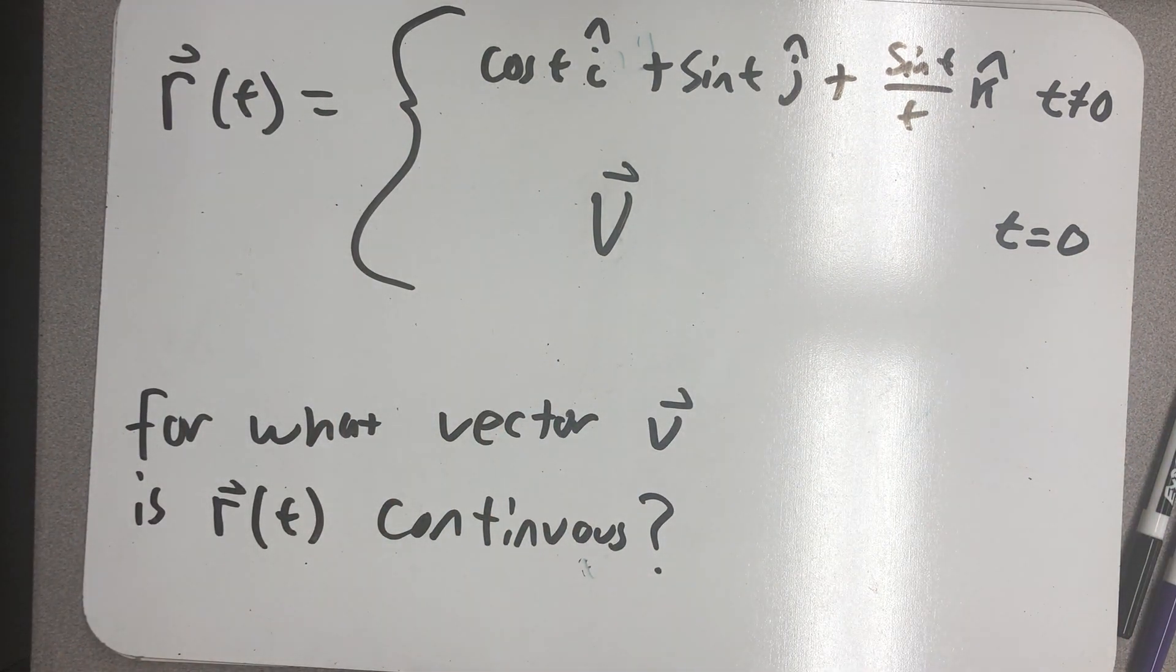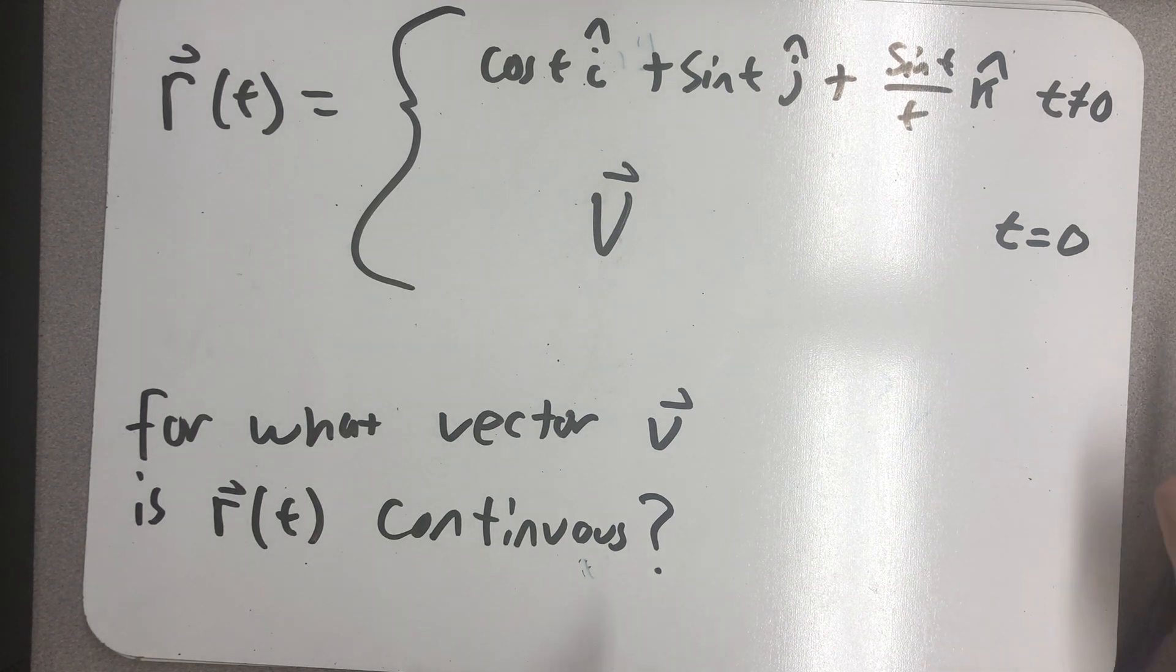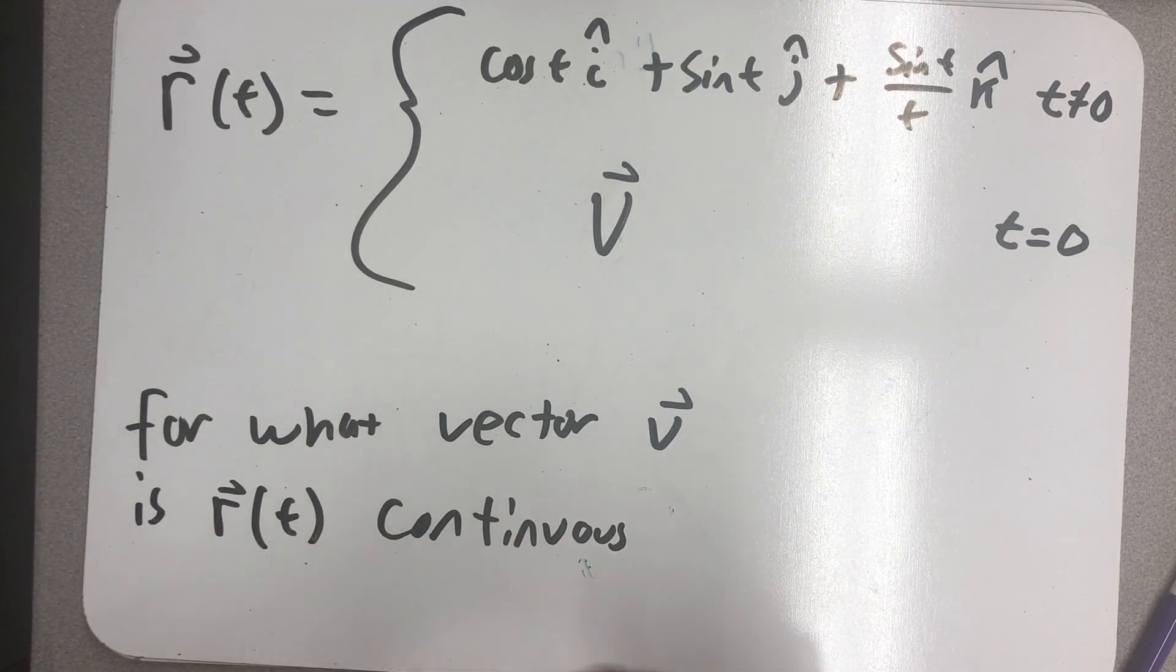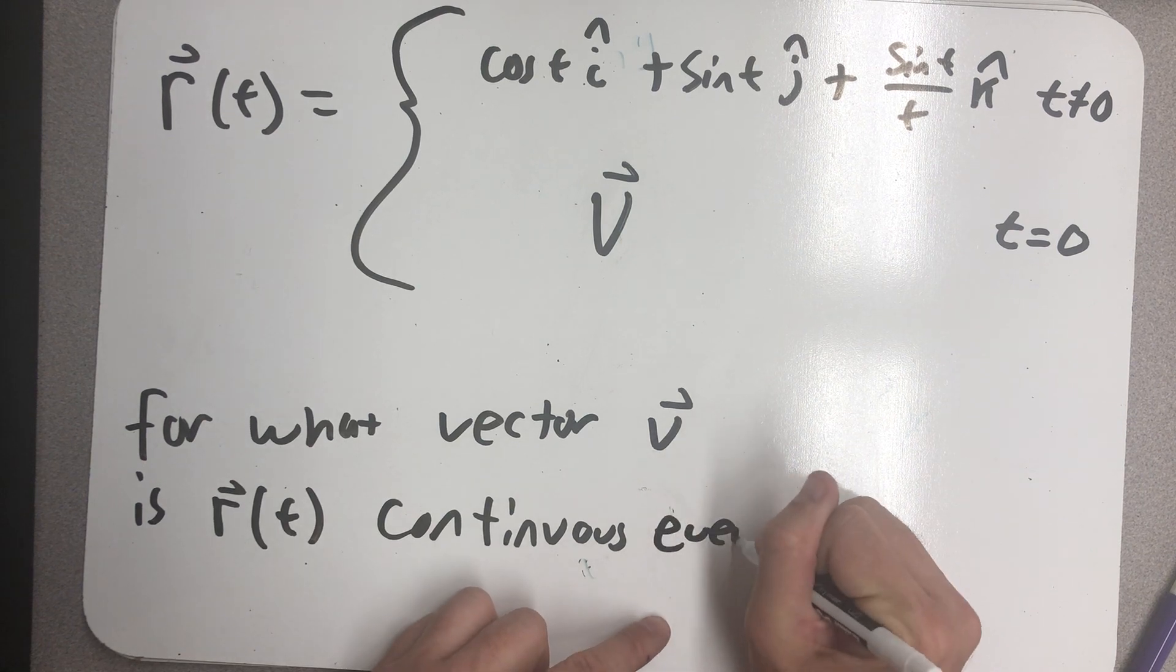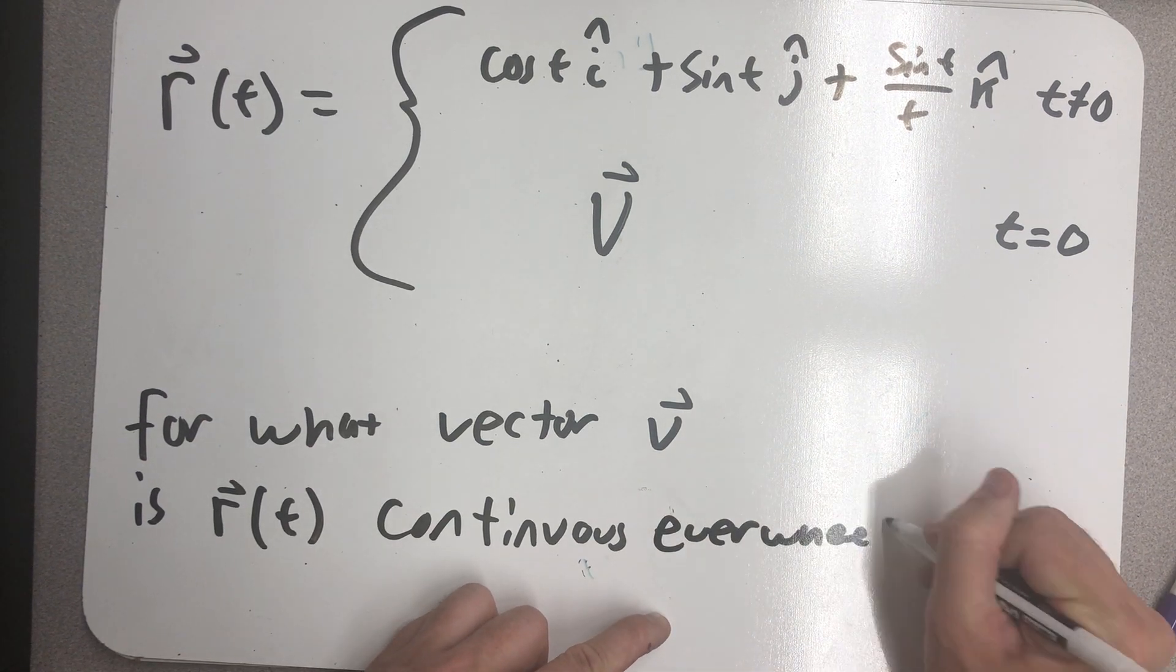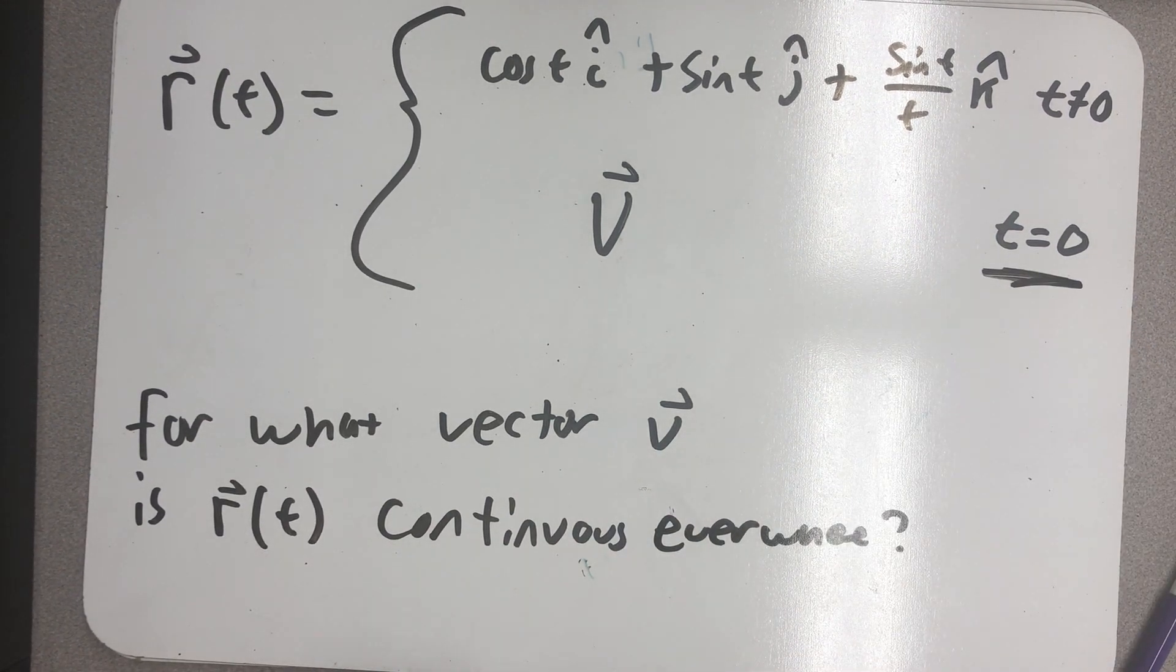For what vector v is r of t continuous? Continuous everywhere. Specifically, I'm worried about being continuous at zero.